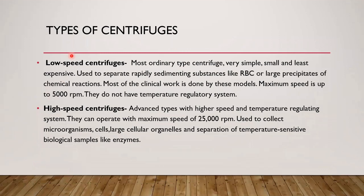The different types of centrifuges are: low speed centrifuges, high speed centrifuges, and ultracentrifuges. Low speed centrifuges are the most ordinary type — simple, small, and least expensive. They are used to separate rapidly sedimenting substances like red blood cells or large precipitates of chemical reactions. Most clinical work is done by these models. Their maximum speed is up to 5,000 RPM and they do not have a temperature control system.